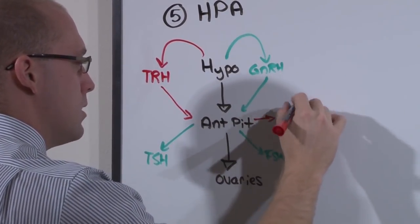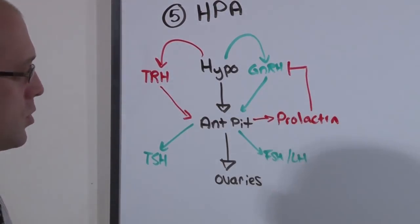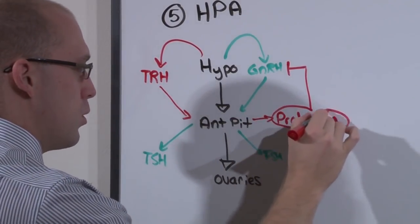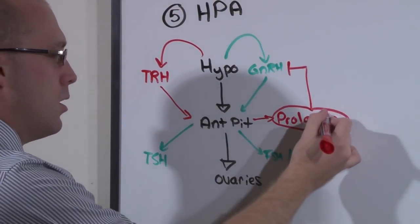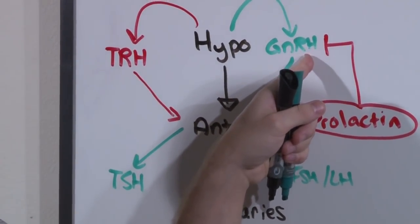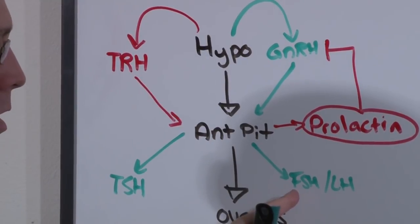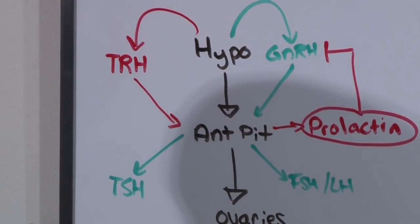But the anterior pituitary also produces prolactin. And what prolactin does in large enough doses is turns off GnRH. So this is where we're going to focus most of our attention on prolactin. Anything that elevates prolactin, anything that causes a prolactinemia, is going to turn off GnRH. If you turn off GnRH, you turn off FSH and LH. If you don't have any FSH or LH, you cannot have reproductive cycle.